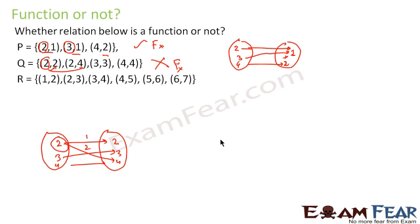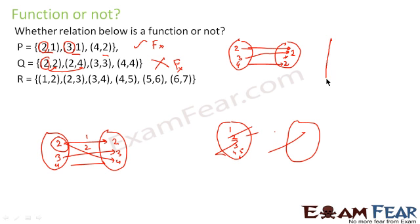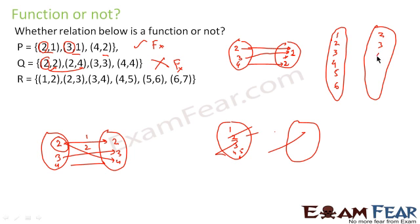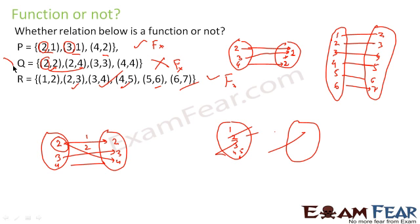Another example with a diagram: left side is {1, 2, 3, 4, 5, 6} and right side is {2, 3, 4, 5, 6, 7}. The mapping is 1→2, 2→3, 3→4, 4→5, 5→6, 6→7. Every element on the left points to exactly one element, so this is also an example of a function. By contrast, the previous example Q is not a function because input 2 had two outputs.